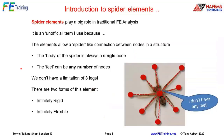Getting a little bit more serious now: spider elements play a big role in FEA analysis. It's an unofficial term — you probably won't see it in many manuals, particularly the more formal ones. I call them spiders because they're spider-like. A spider element allows connection between nodes in a structure. We've got the body of the spider in the middle, and then the feet are the ends of the legs. We don't have a limitation of eight legs — on a training course once, someone asked if we could only have eight.